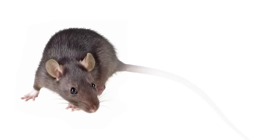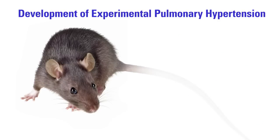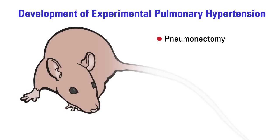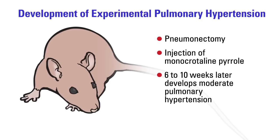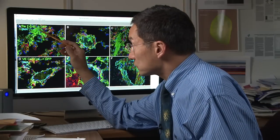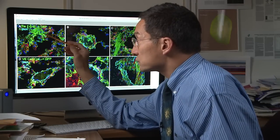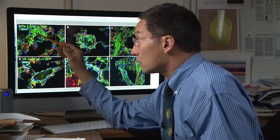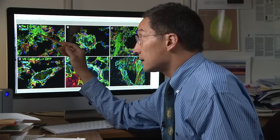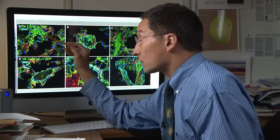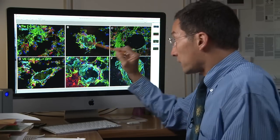During the injury process subsequent to the development of experimental pulmonary hypertension, the mouse gets a pneumonectomy, subsequently gets injected with monocrotaline and pyrrole, and six to ten weeks later develops moderate pulmonary hypertension. When we look at the pathology of that mouse, we see that vessels are cross-sectionally filled in with green cells representing endothelial genetic lineage.